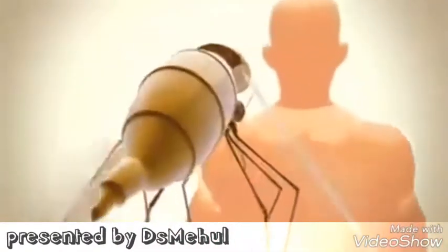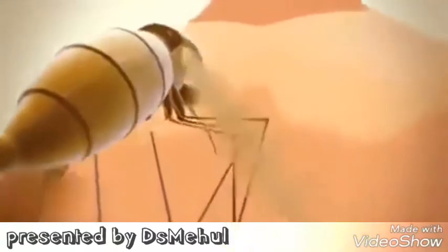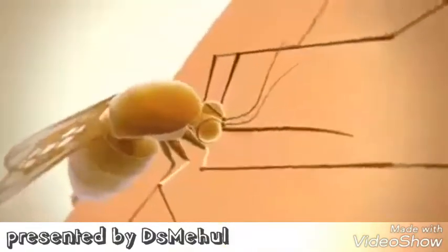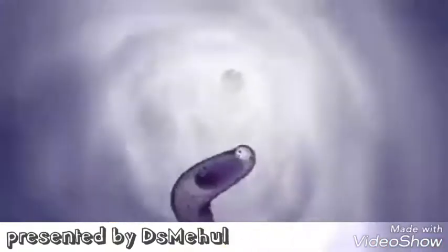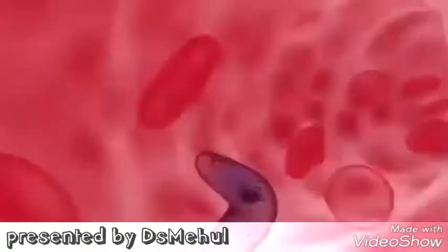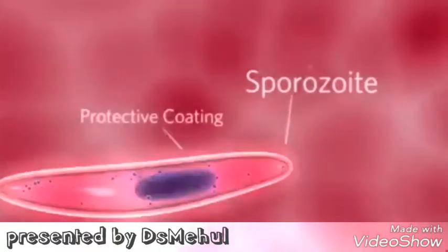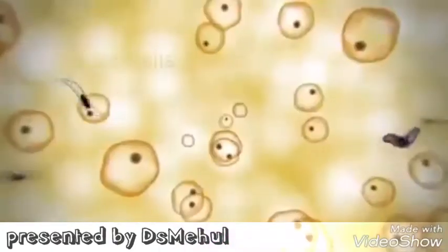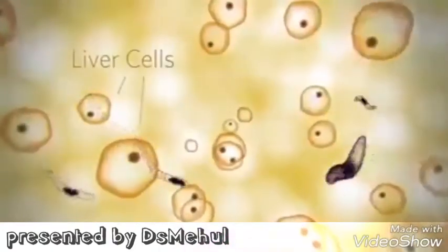The malaria parasite's life cycle is very complex, involving many stages. As the mosquito feeds, malaria sporozoites enter into the human bloodstream. They quickly make their way to the liver and infect liver cells, with the help of the circumsporozoite protein.